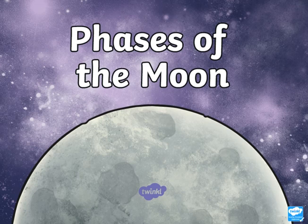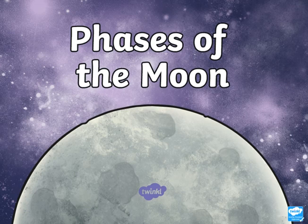Moving on to the Earth's movement in space, such as revolution and rotation, how it affects day length, how it affects seasonal change. We finished everything regarding Earth as a planet in space.